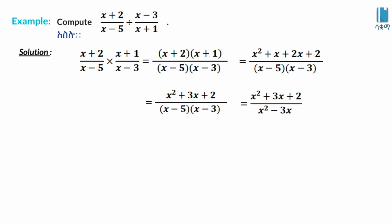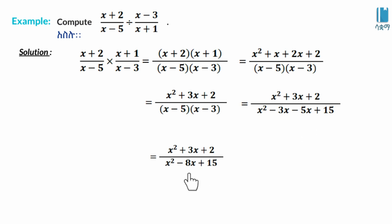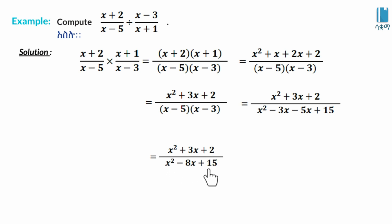Continuing the denominator: x·(−3) = −3x, (−5)·x = −5x, (−5)·(−3) = 15. Combining: −3x and −5x gives −8x. So the denominator is x² − 8x + 15. The final result is (x² + 3x + 2) divided by (x² − 8x + 15).